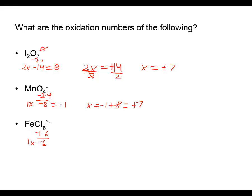I have one iron as my unknown x, and one x minus six equals the overall charge of negative three. Adding six to both sides gives x equal to a positive three. So we have the iron three cation present in this complex ion FeCl₆³⁻. Checking: positive three plus negative six equals negative three - confirmed.